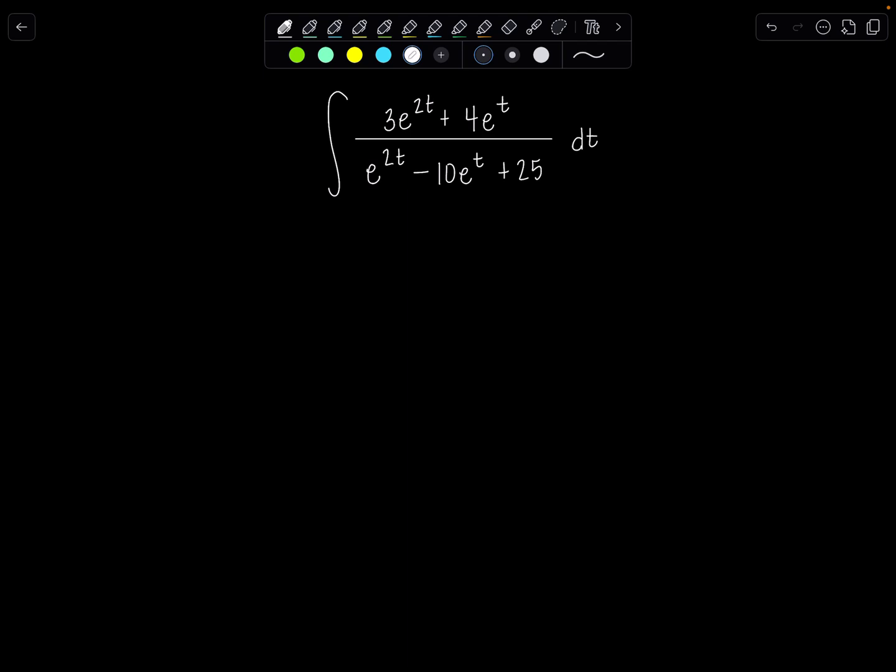I'm going to jump right in. What screams at me is we need to do some sort of u substitution and get all these e to the t's under control. I'm hoping I have an extra one to make that u sub happen, and sure enough I can factor out e to the t from both terms in the numerator, so I'm hopeful that'll work out.